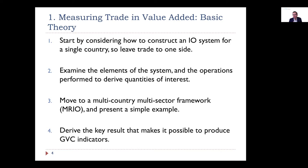The basic theory breaks down into about four steps. First, we consider what an input-output system looks like in a single-country setting, just to fix ideas. We'll then perform some operations on that system to get a sense of what the operations mean. Then we'll move into a multi-country, multi-sector framework — the multi-region input-output table — and I'll give a simple example of how to work with that.